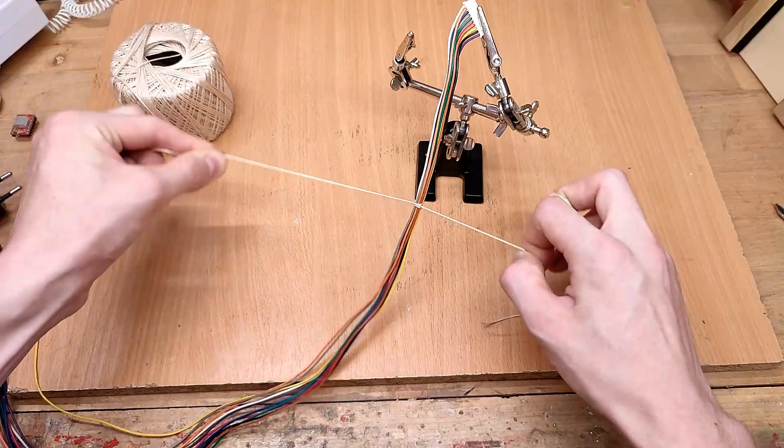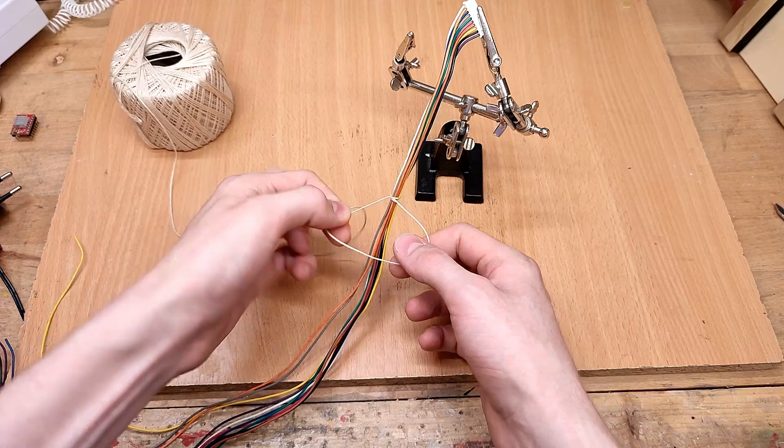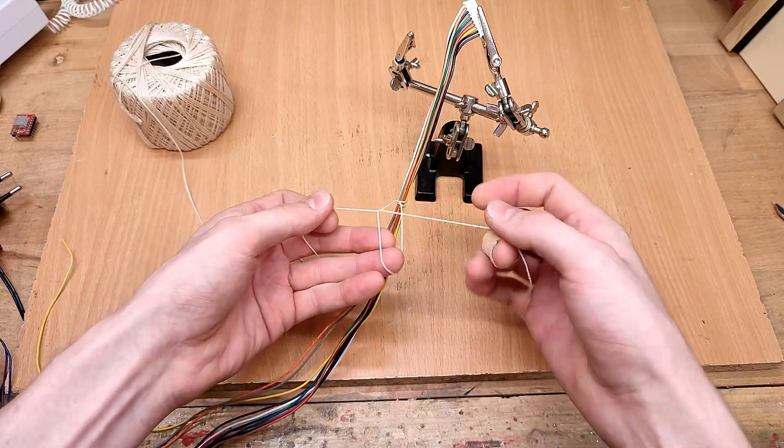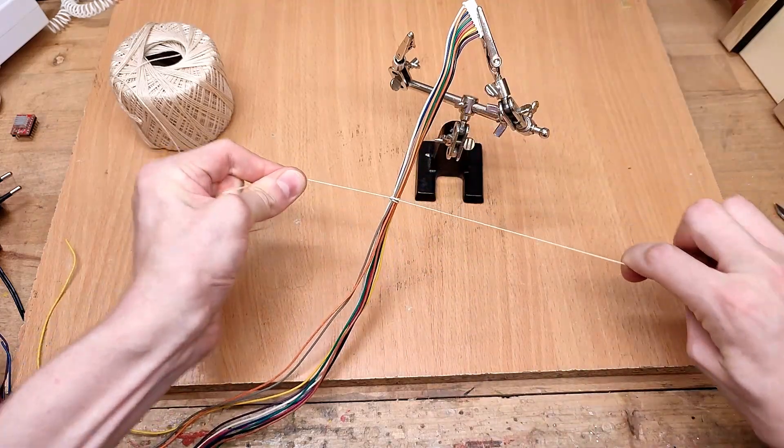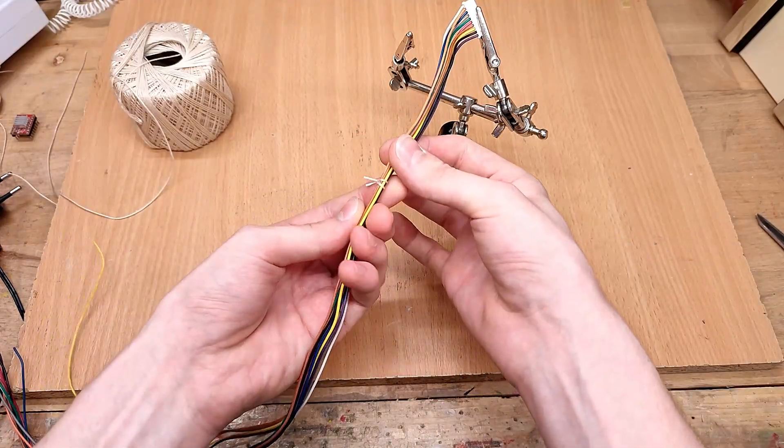Pull it tight and put an overhand knot, which is basically the most generic knot everyone gets taught as a child, over it to secure it. Then you snip off your string, and there is your spot tie.